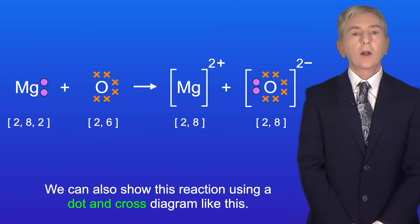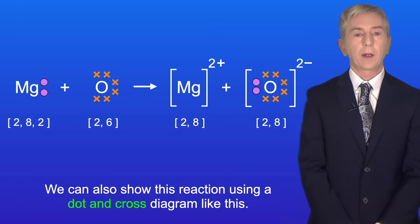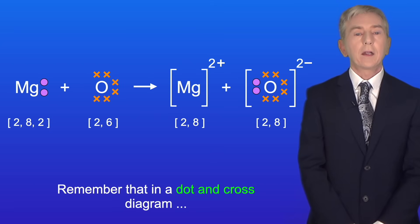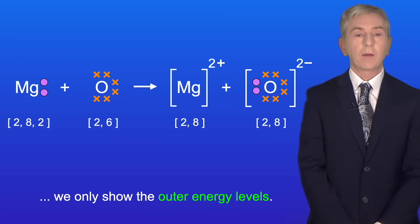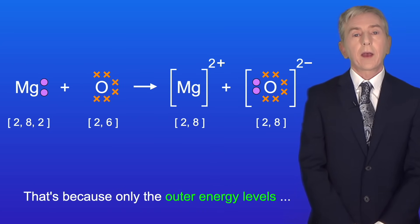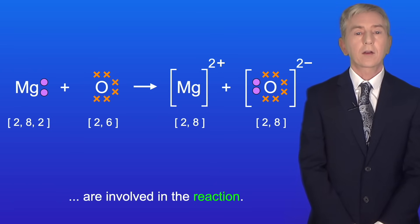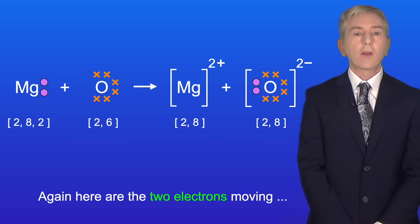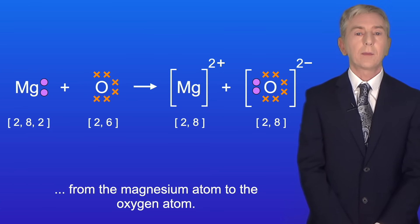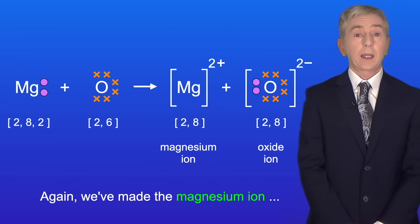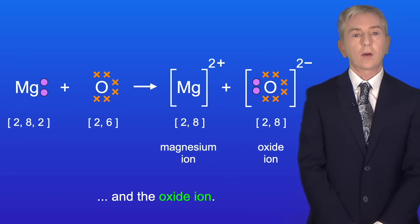We can also show this reaction using a dot and cross diagram. Remember that in a dot and cross diagram we only show the outer energy levels, because only the outer energy levels are involved in the reaction. So here are the 2 electrons moving from the magnesium atom to the oxygen atom, and again we've made the magnesium ion and the oxide ion.